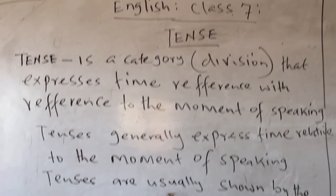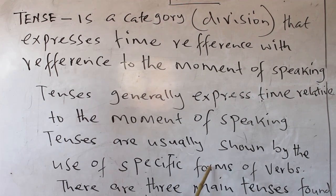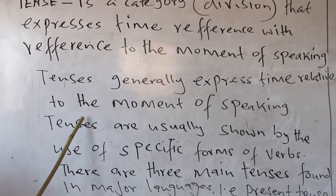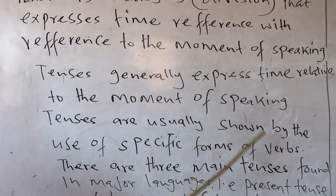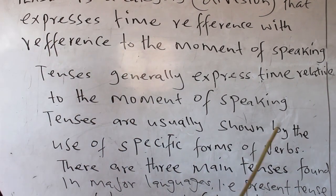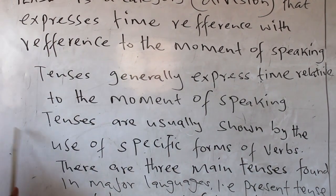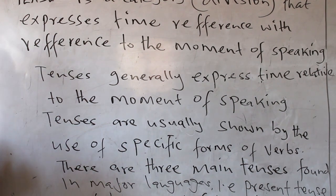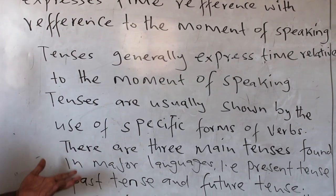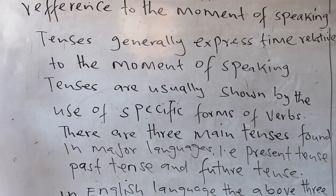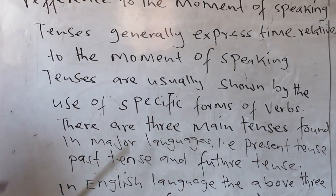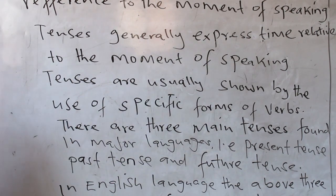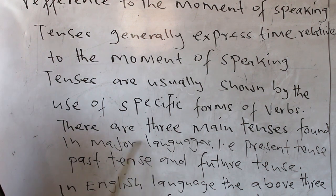Tenses are usually shown by the use of a specific form of verbs — specific, particular forms of verb. If the verb is present tense, there is a way that it is written. If it is future tense, there is a way it is written.